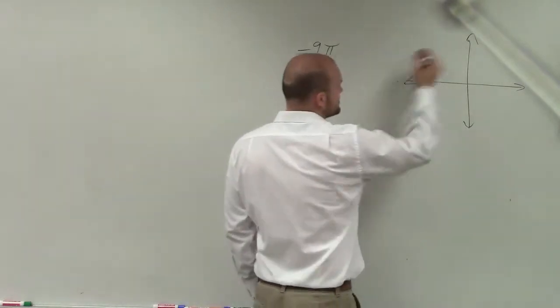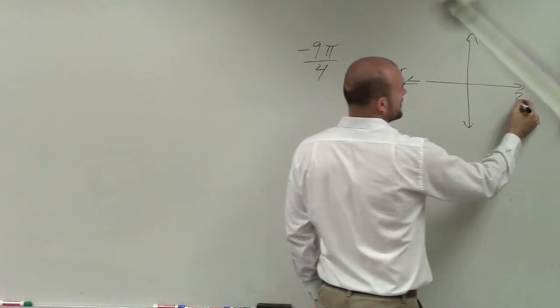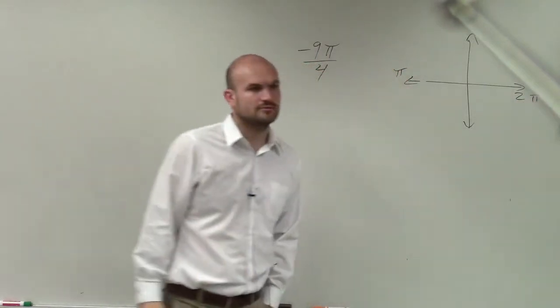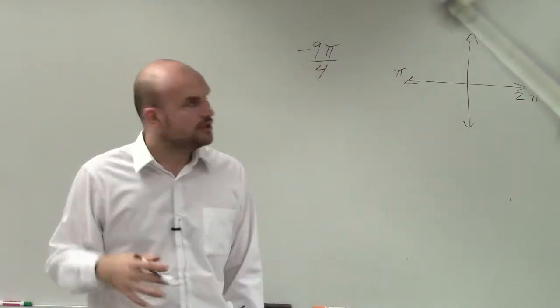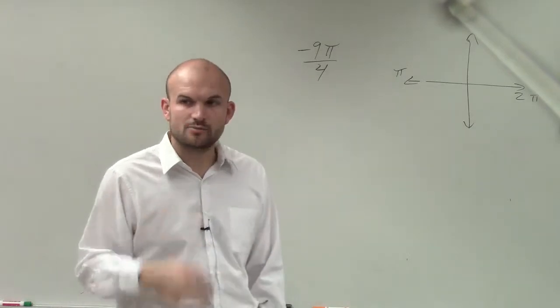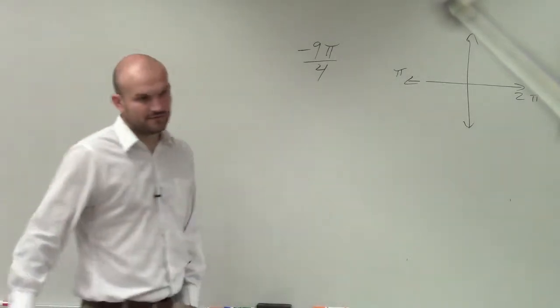So when looking at radians, we know halfway around a circle is pi, all the way around a circle is 2 pi. Rather than 180 and 360, we're dealing with radians of pi and 2 pi. So now it says 9 pi over 4.